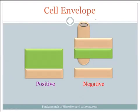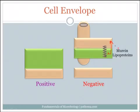Another thing that gram-negatives have are little spring-like structures called murein lipoproteins, and these connect the cell wall to the outer membrane.